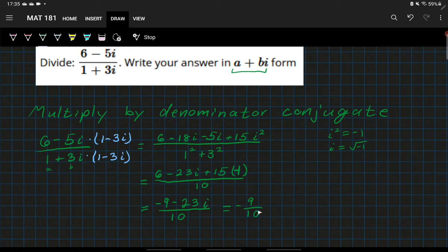So negative nine over 10 minus 23i over 10. Or even further, we could write this as negative nine over 10 minus 23 over 10 times i to truly get it in that a plus bi form.